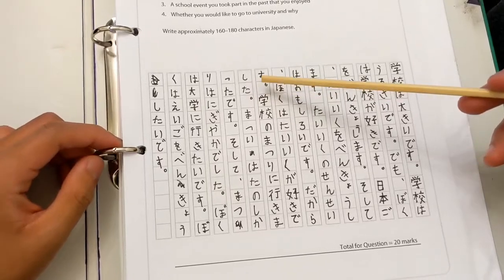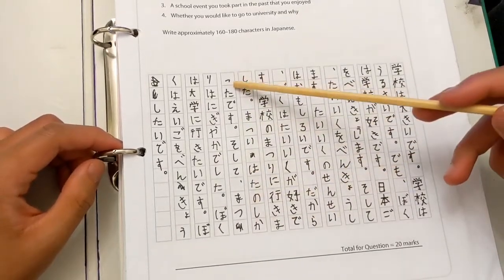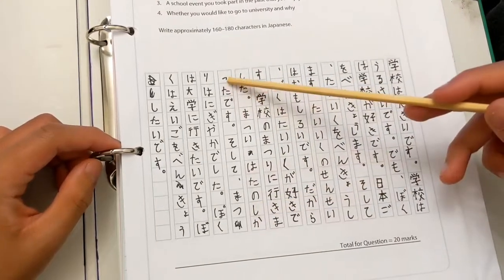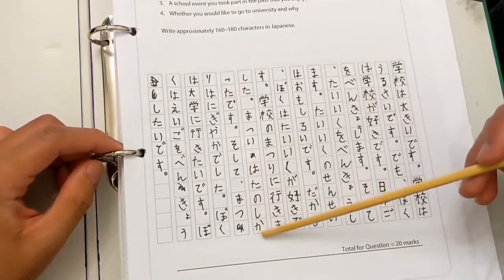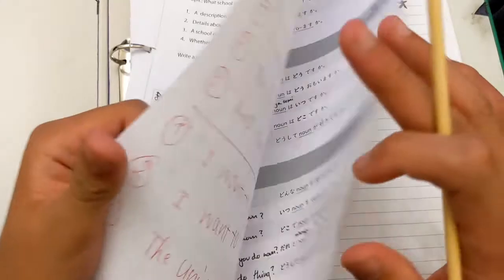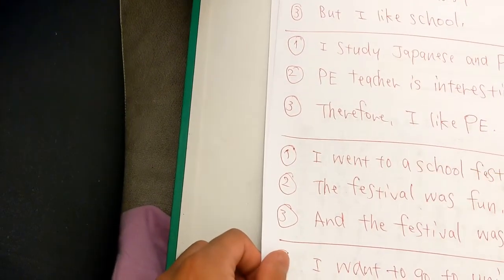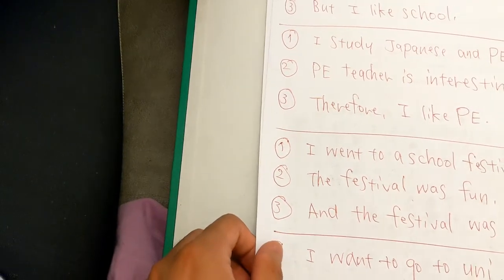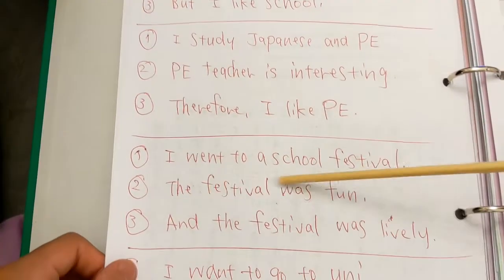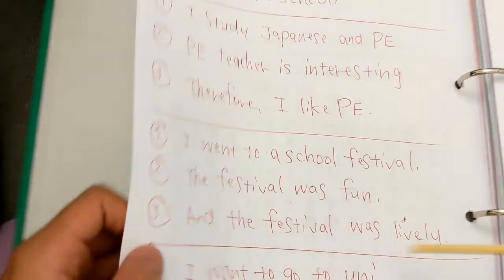学校の祭りに行きました。Right. Matsuriは楽しかったです, which means if we go here, I went to a school festival. The festival was fun. And now we're going to read, and the festival was lively. Here.